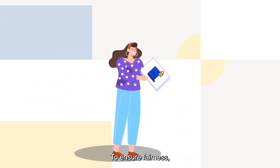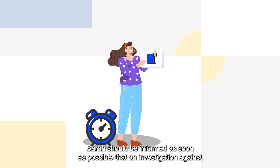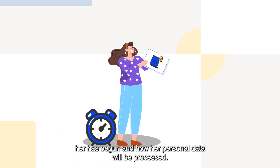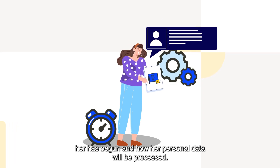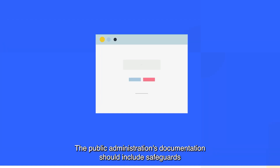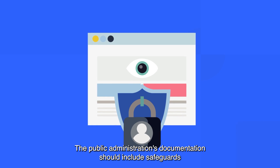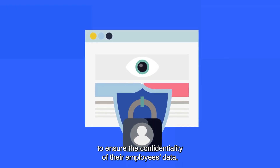To ensure fairness, Sarah should be informed as soon as possible that an investigation against her has begun and how her personal data will be processed. The public administration's documentation should include safeguards to ensure the confidentiality of their employees' data.